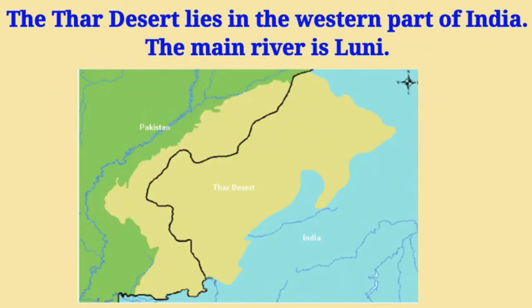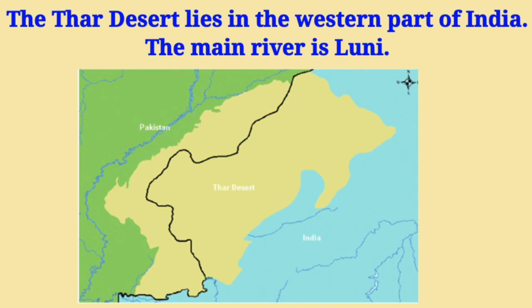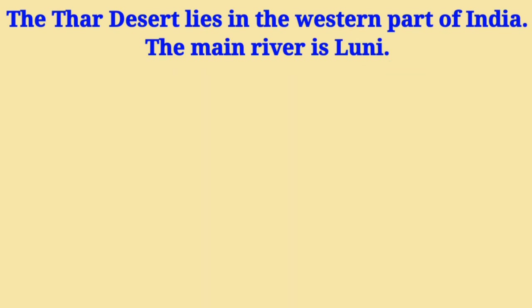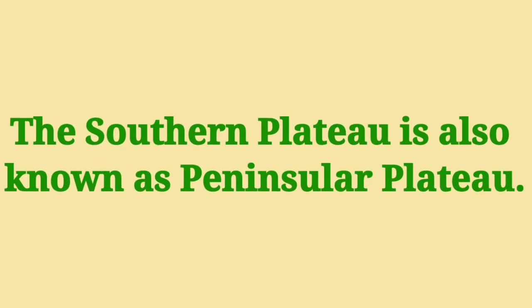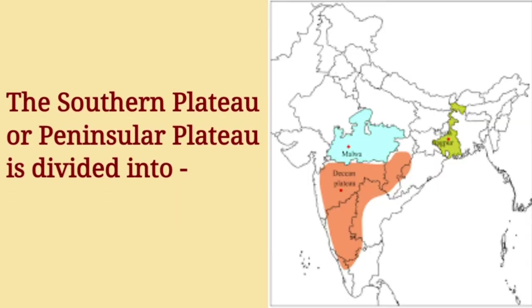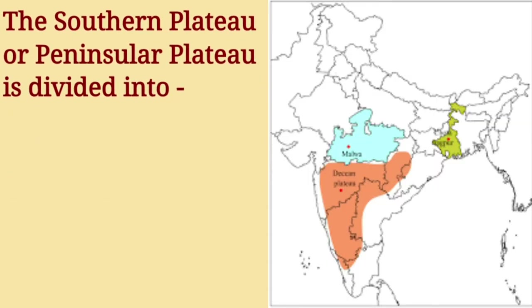The Thar desert lies in Rajasthan and the main river here is Luni. The southern plateau is also known as the Peninsular Plateau. The southern plateau has been divided into three parts.